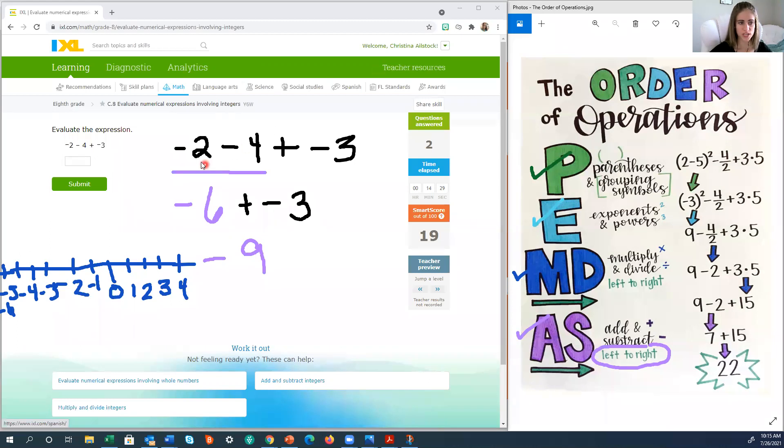Alright. Well, we start at negative 2. So negative 2 is where we begin and we subtract 4. Well, if we subtract, that means we are going backwards. So 1, 2, 3, 4, which lands us at negative 6.